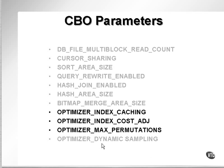The optimizer max, or maximum permutations, parameter simply tells the optimizer to not search for an optimal plan for too long. Essentially, the risk there is that you could end up with a sub-optimal execution plan. However, you don't want the database to spend 100 years trying to figure out the best way to execute something without actually executing it.